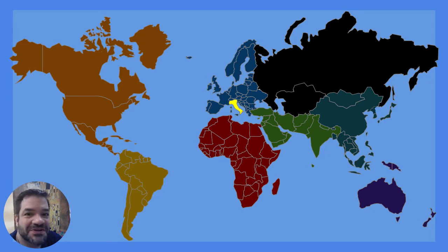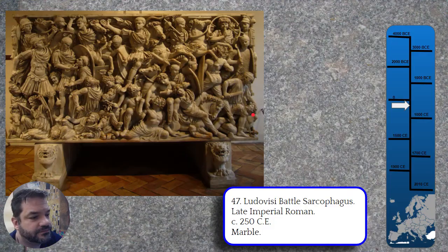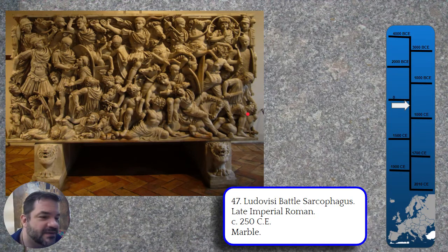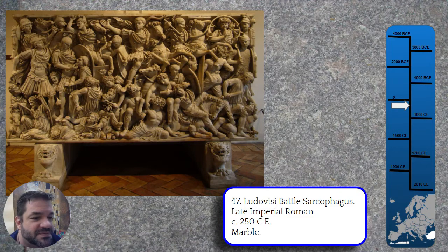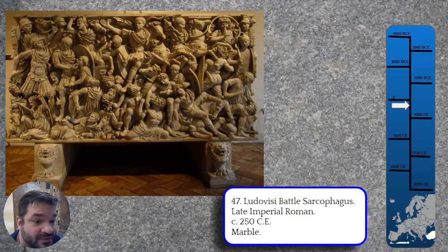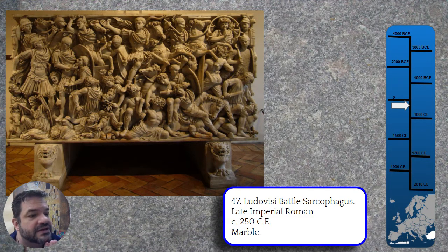Alrighty, cherubs, so this is our last piece for Imperial Rome. And here we get the Ludovisi Battle Sarcophagus. Now this box is spectacular. It's this high relief that depicts a battle between the Romans and the Gauls — Romans and the Barbarians.